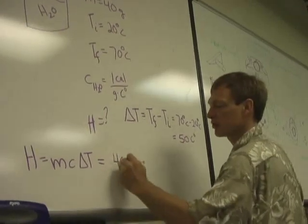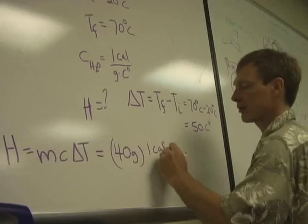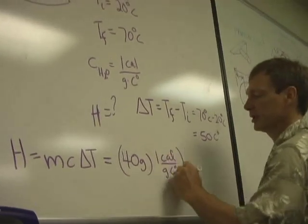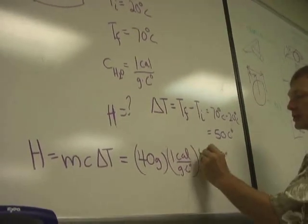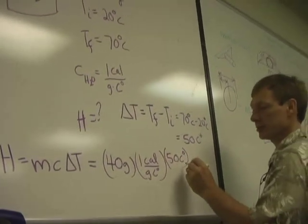Now I've got everything I need. I've got 40 grams of mass. Specific heat of water is one calorie per gram per Celsius degree. And the temperature difference is 50 Celsius degrees. Check it out. I've got...